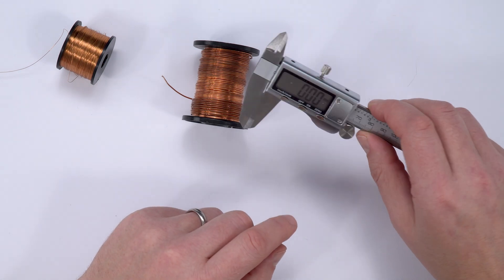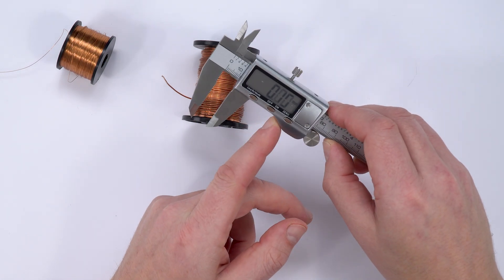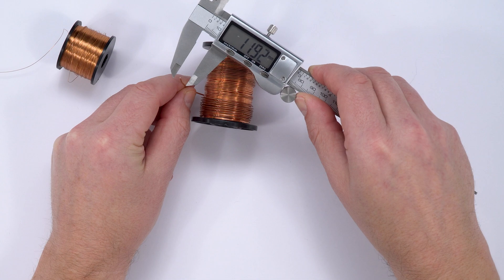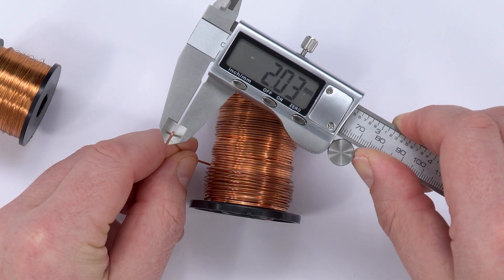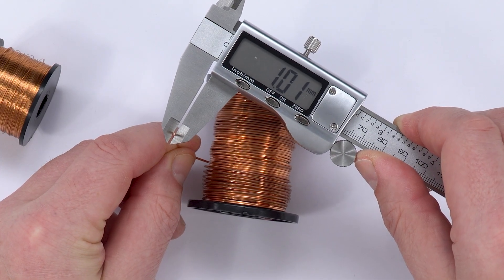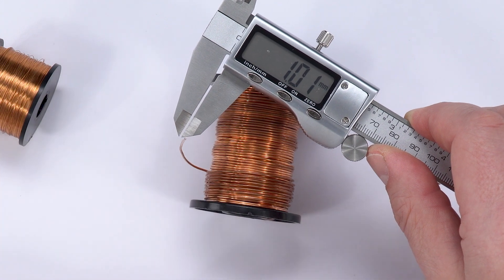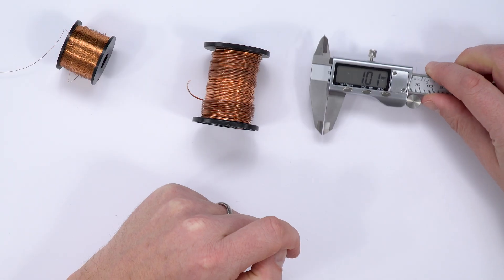Here I have a digital caliper. I'm going to pull this back and very gently put it across that piece of wire. I've got a value there of 1.01 millimeters.